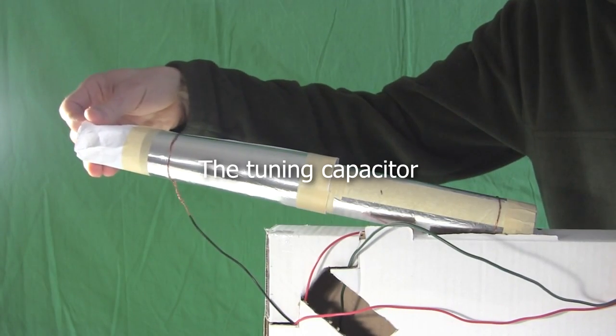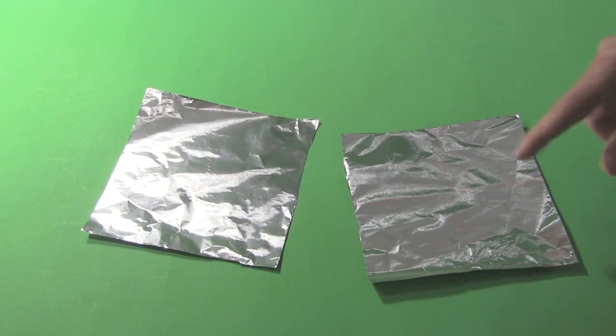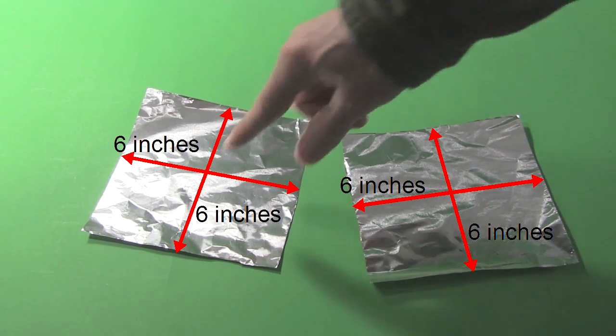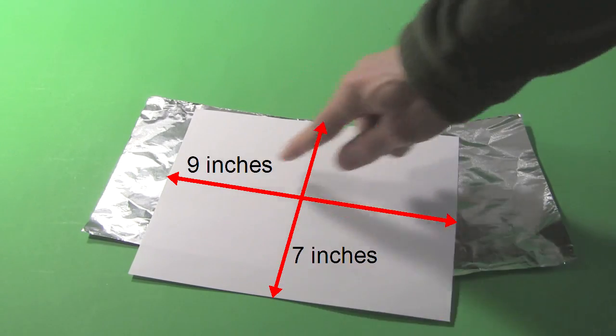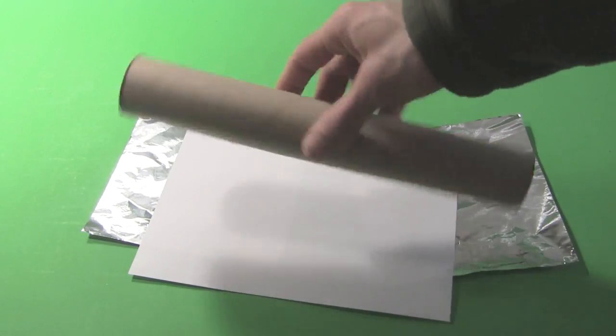Next we need to make the tuning capacitor. I made two pieces of aluminum foil cut 6 inch by 6 inch each. A piece of paper cut 7 inch by 9 inches. A paper towel roll.